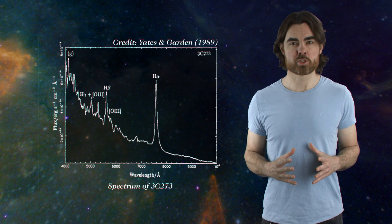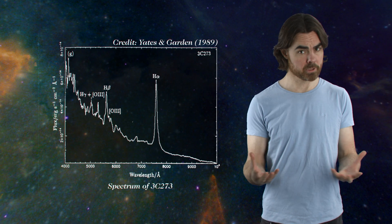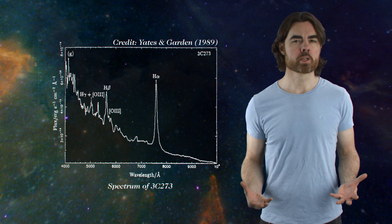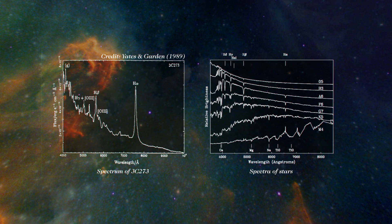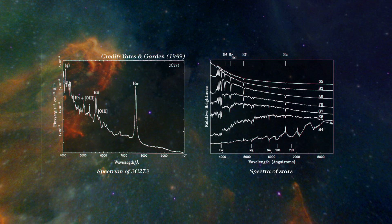Astronomers turned their optical telescopes on this strange star and split the light into a spectrum. It looked nothing like the spectrum of any star ever seen, and so the name quasi-stellar radio source was born, later to become quasar.